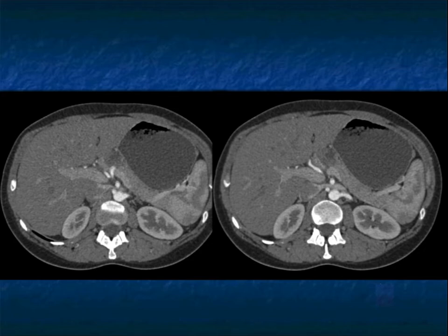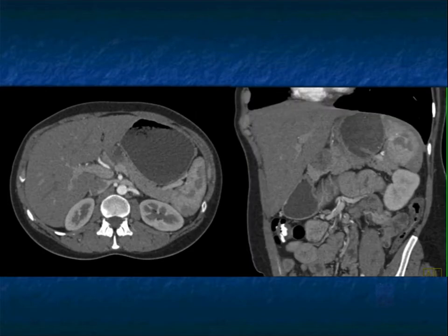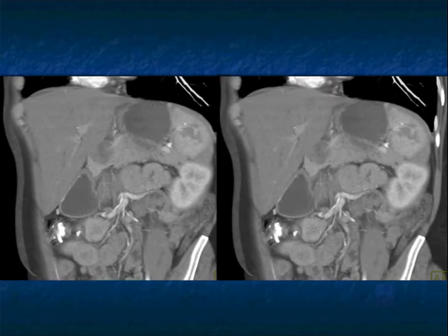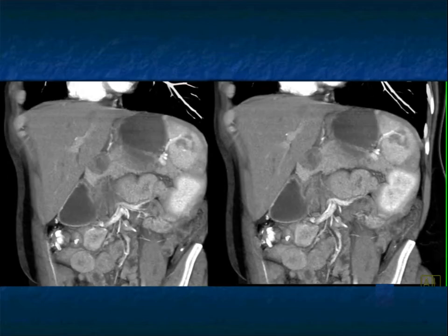One thing you notice by looking at all these SPNET tumors — you don't see a dilated pancreatic duct. That can be a very helpful differential diagnosis point. Again cystic and solid — you could think of a serous cystadenoma, you could think of an MCN, but you've got to think of a SPNET also, particularly if it's a younger patient. On the coronal views it is also very well defined, very similar to the other cases.